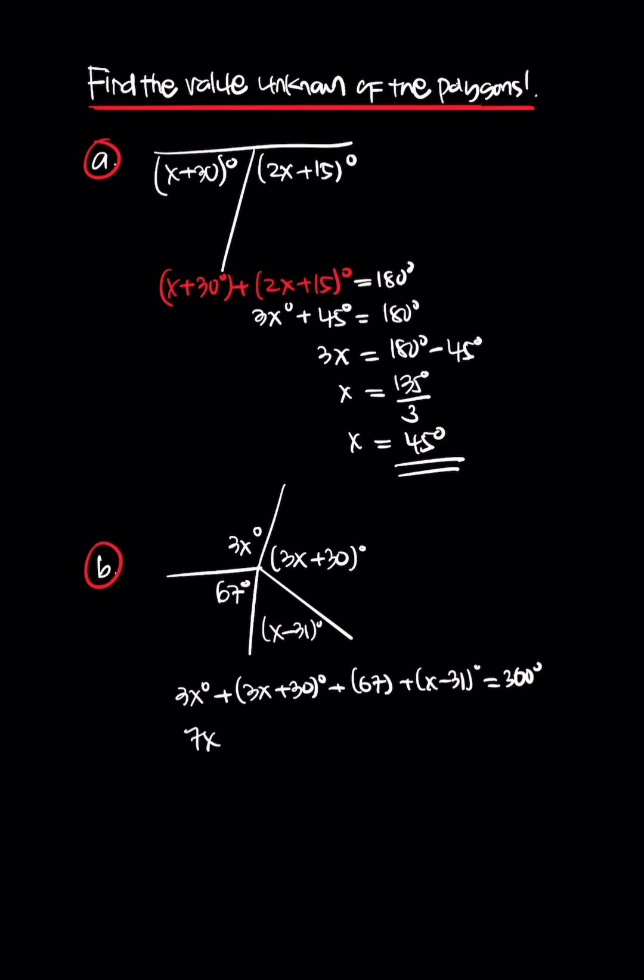Then this is 7x (that's 3x plus 3x plus x) plus 30 plus 67 plus 3 minus 31 equals 360. So we can solve it.